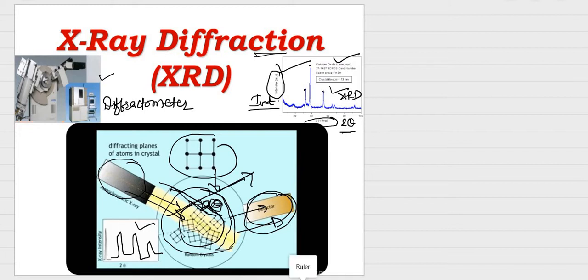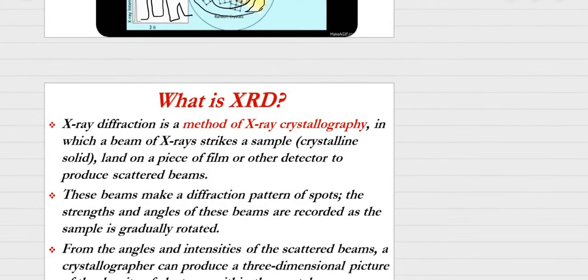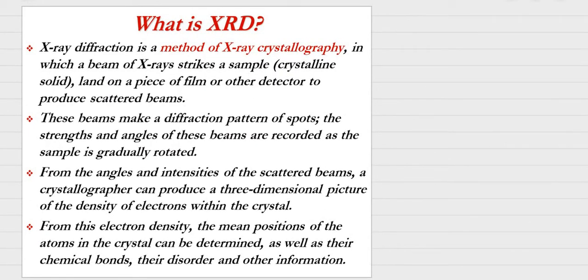Now let us see in detail what X-ray diffraction means and what happens in the X-ray diffractometer. X-ray diffraction is a method of X-ray crystallography in which a beam of X-rays strikes a sample — whether crystalline or amorphous — and a detector produces the scattered beam. First we have an X-ray gun, then the sample, and then the detector.